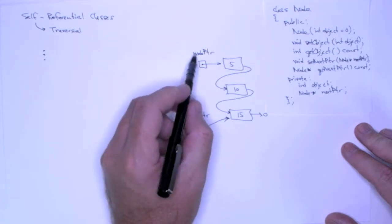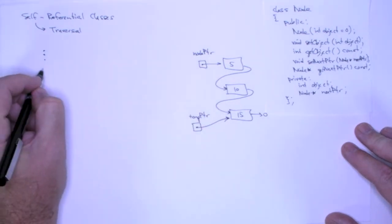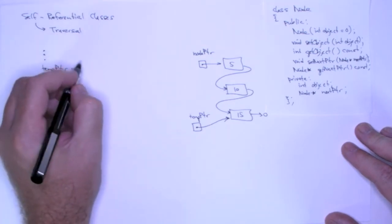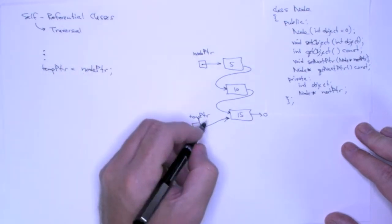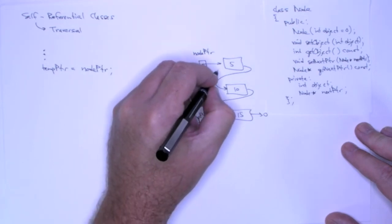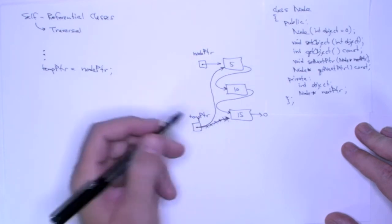Well, the first thing I need to do, I'm not going to use node pointer. I'm going to reset temp pointer so it points to the head of the list again. And I can do that by assigning temp pointer equal to node pointer. And that is going to make temp pointer point to the first element.